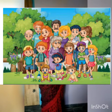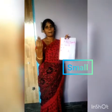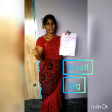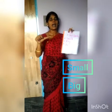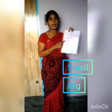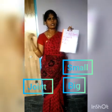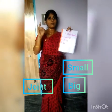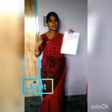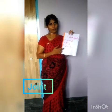Shall we revise one more time? Small family — what are all in the small family? Father, mother, brother and sister. In the big family, the same father, mother, brother, sister added to the grandparents — grandfather and grandmother — we call it a big family. In the joint family, we have more members: father, mother, brother, sister, grandfather, grandmother, uncle, aunt and cousins.